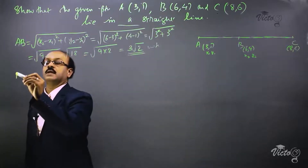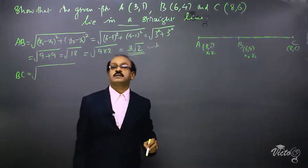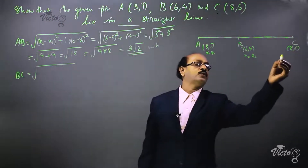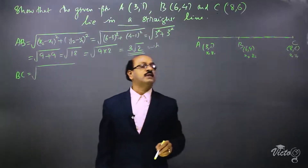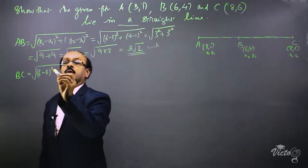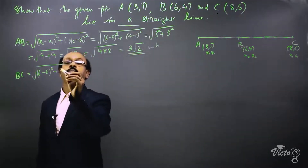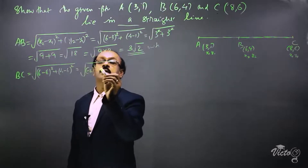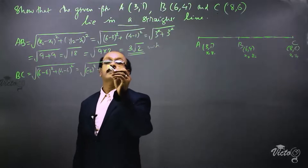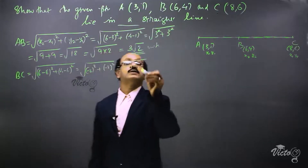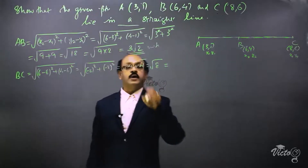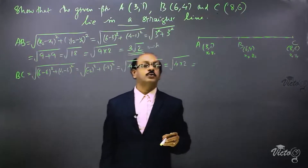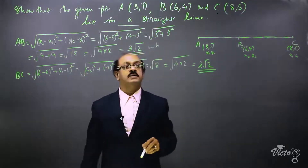Now find the length of BC. Using the same distance formula, with B(6,4) as (x1, y1) and C(8,6) as (x2, y2): x2 − x1 = 6 − 8 = −2, and y2 − y1 = 4 − 6 = −2. So BC = √((−2)² + (−2)²) = √(4 + 4) = √8 = √(4 × 2) = 2√2 units.